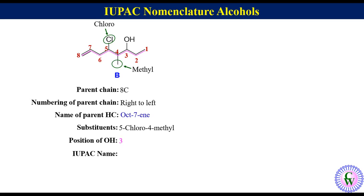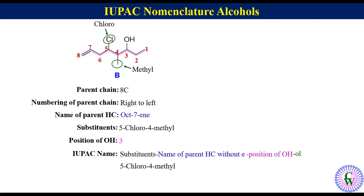Position of OH is 3. IUPAC name: substituents, name of parent hydrocarbon without 'e', position of OH, and then 'ol'. Putting all this information in order gives the IUPAC name of the molecule as 5-chloro-4-methyloct-7-en-3-ol.